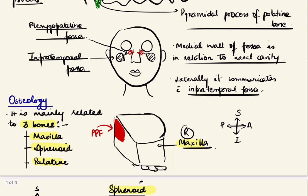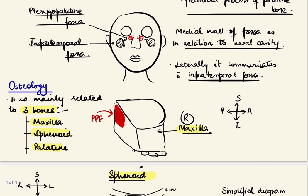Here is another diagram from the front. You can see the pterygopalatine fossa is closely related to the posterior part of the nasal cavity. It opens medially into the nasal cavity, and laterally it communicates with the infratemporal fossa. So pterygopalatine fossa medially communicates with the nasal cavity and laterally with the infratemporal fossa.